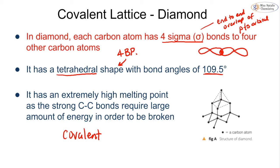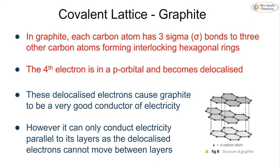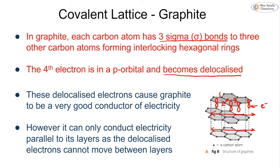Comparing this to graphite: in graphite, carbon atoms have three sigma bonds to three different carbon atoms, forming hexagonal rings. Each carbon in the center is bonded to three others, leaving one electron in a p orbital that is not involved in bonding. These p orbital electrons become delocalized — each carbon has a p orbital with one electron, and that electron becomes delocalized and can move within the layers of the graphite.